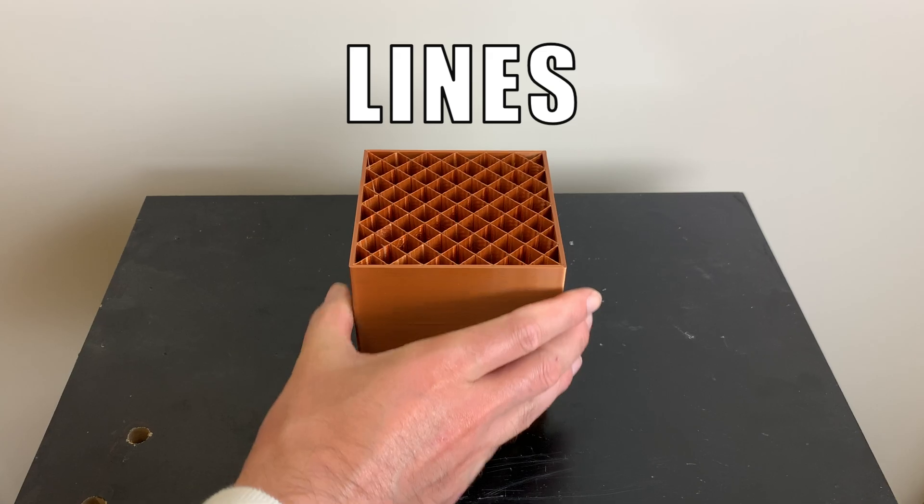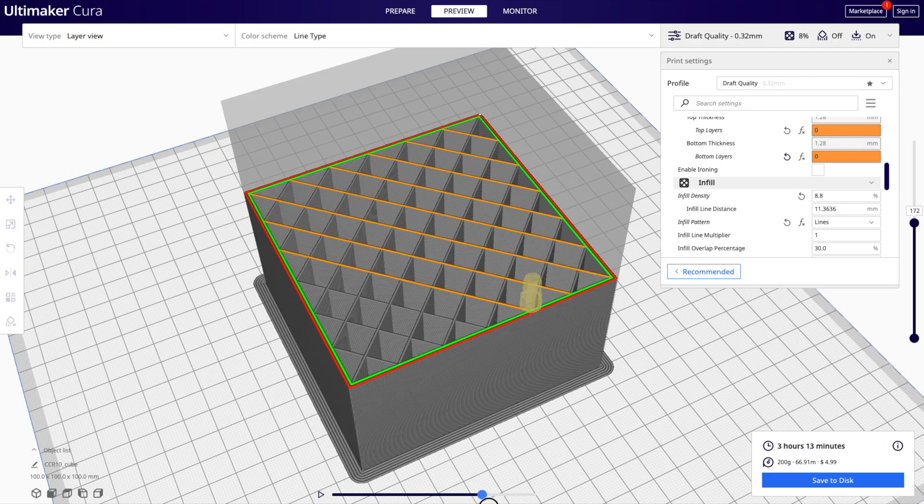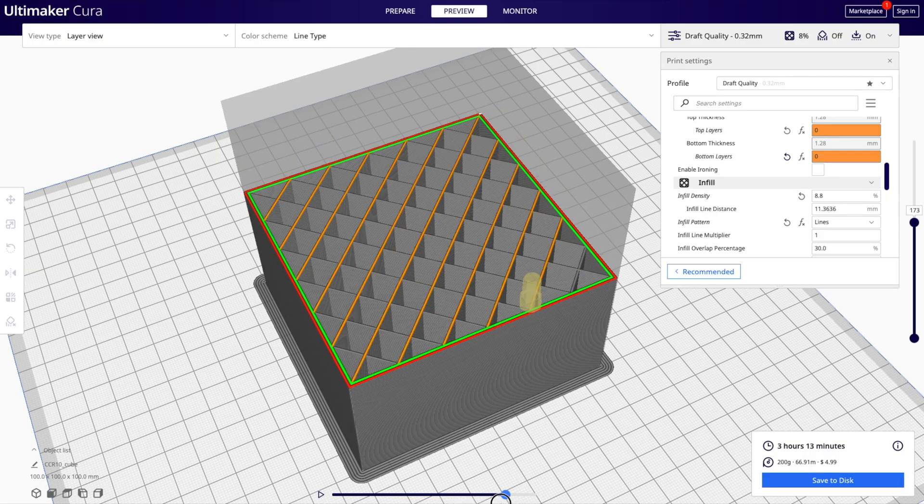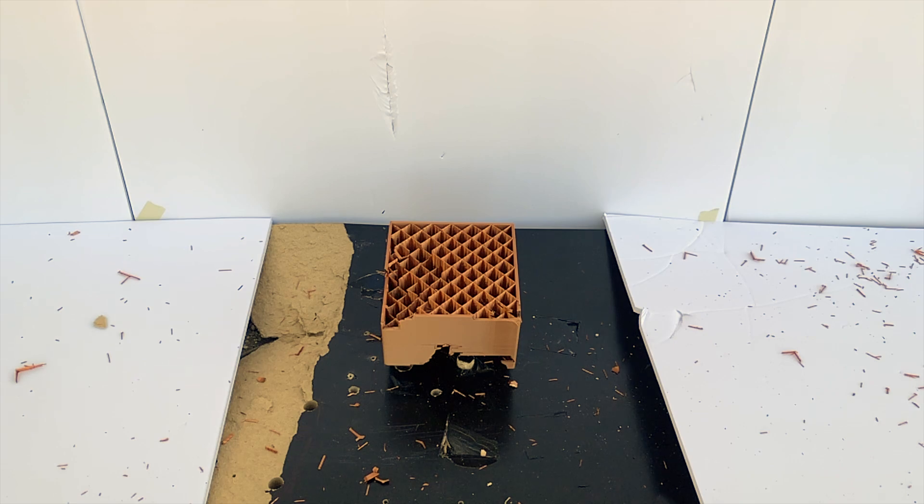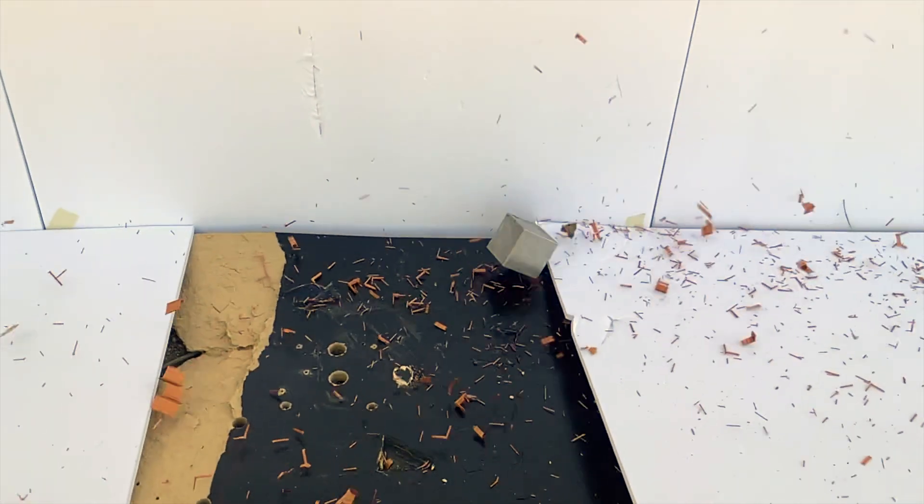And lastly we have lines infill. This infill basically makes a crisscrossing line pattern. This one was by far the weakest.